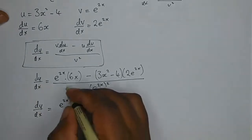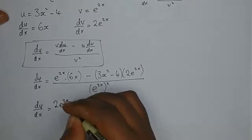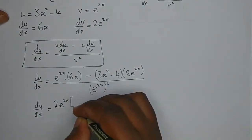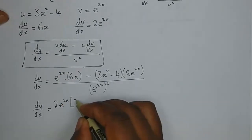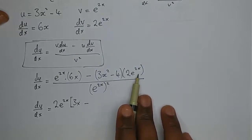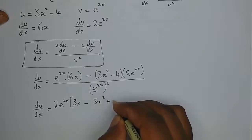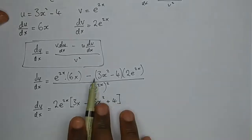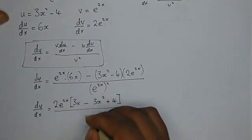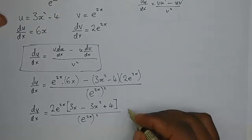So it's a lot of expanding and simplifying. We can factor out 2e to the power 2x — you can see it's common. After factoring out 2e to the power 2x, what remains is 3x squared plus 4. It's plus 4 because the negative multiplied by that negative gives us a positive. Everything is over e to the power 2x, squared.